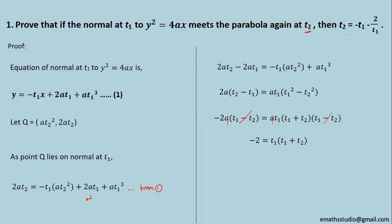Now look at this expression what we want to prove is the relation between t₂ and t₁. So I can modify further this as -2/t₁ = t₁ + t₂. In next step I can write t₂ = -t₁ - 2/t₁. This is the required proof.